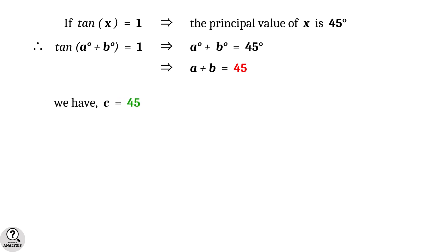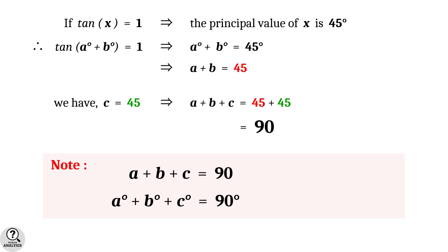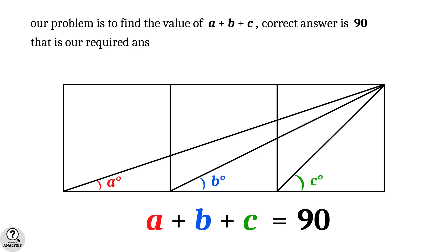Since a plus b equals 45 and c equals 45, we get a plus b plus c equal to 45 plus 45 equal to 90. It is important to note the difference between a plus b plus c and a degrees plus b degrees plus c degrees. Our problem asks for the value of a plus b plus c, so the correct answer is 90 — not 90 degrees.